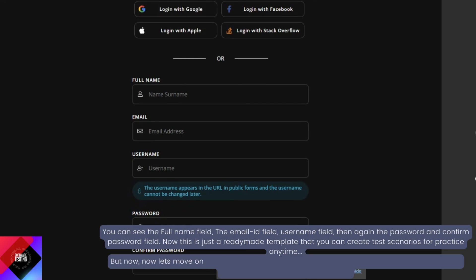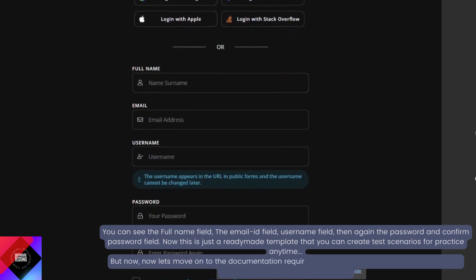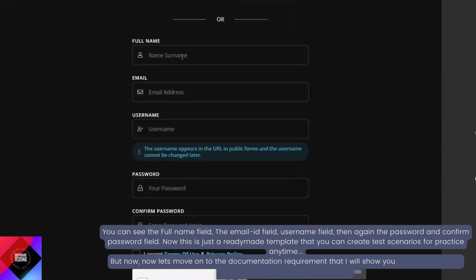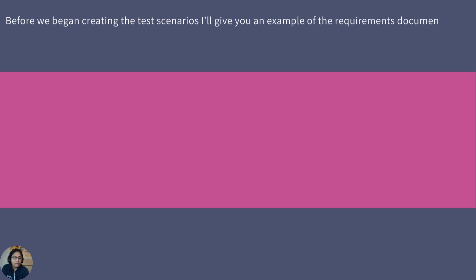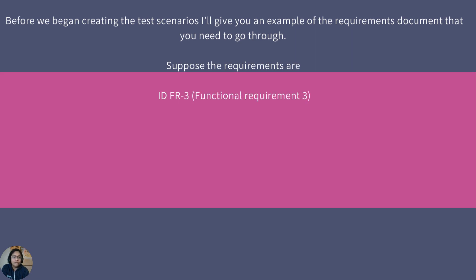Let's move on to the documentation requirement — I will show you how to create test scenarios and execute them later on. Before we begin creating the test scenarios, I will give you some example of the requirement document that you need to go through. Suppose the requirements are IDFR3, which means Functional Requirement ID 3. The title should be Registration Form Functionality.